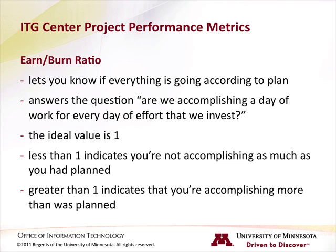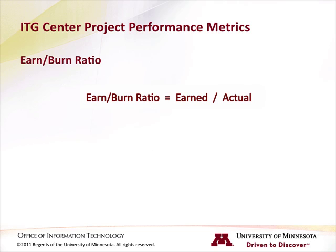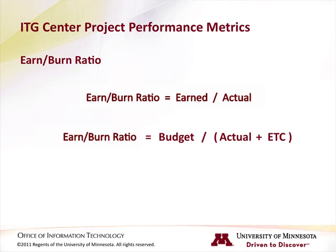Values greater than 1 indicate that you're accomplishing more than was planned. The calculation for the earned-burn ratio looks like this: earned divided by actuals. Or another way to view this calculation is: the earned-burn ratio equals budget divided by actuals plus ETC. Again, notice the role that the core metrics play in determining this metric.